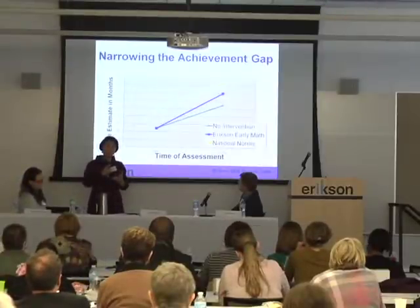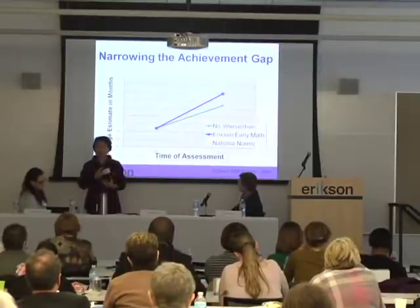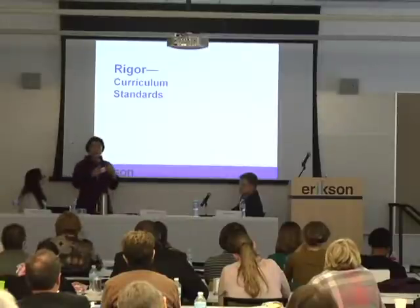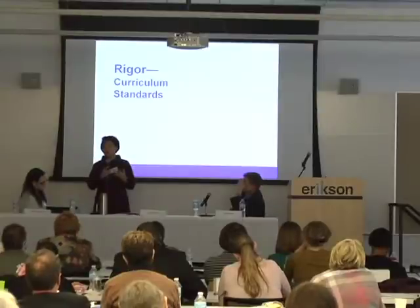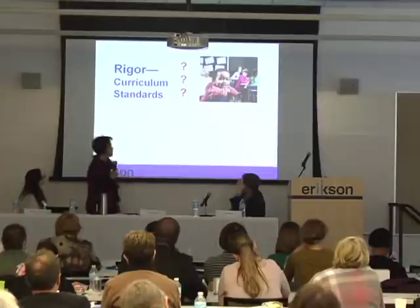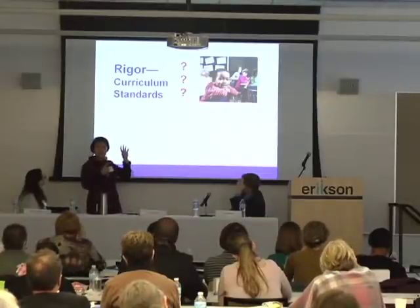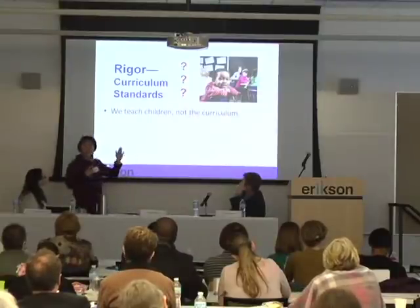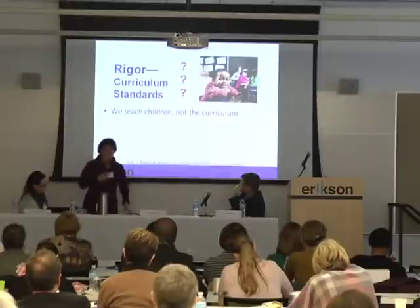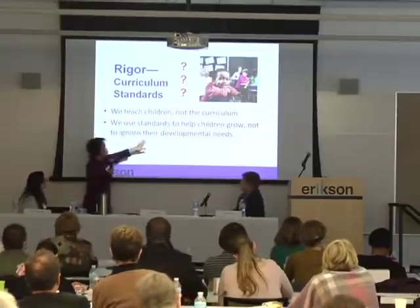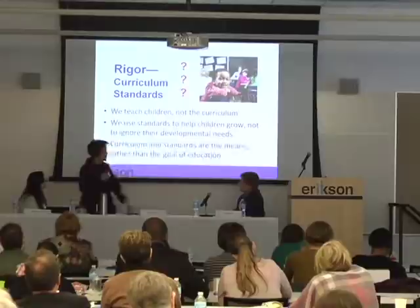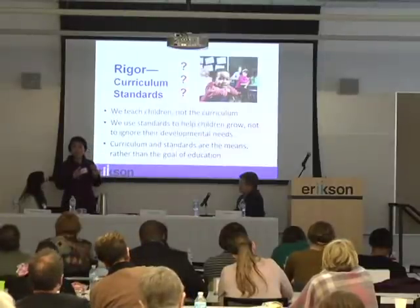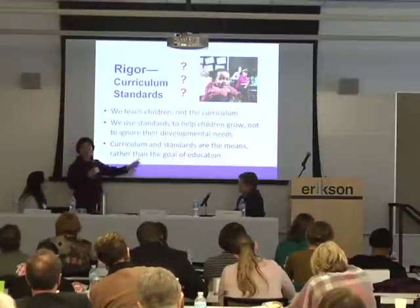I would say this is evidence of what rigorous and responsive teaching can produce. Today, when we talk about rigor, we often refer to curriculum standards. But the question is: is it possible to talk about these kinds of standards and curriculum without at the same time talking about the children? After all, we teach children, not the curriculum. We use standards to help children grow, not to ignore their developmental needs. Lastly, curriculum and standards are the means to help children grow, to develop, to reach their highest potential. They are not the goals or the ends of education. Thank you.